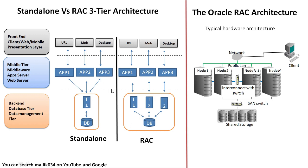And then my back-end is going to be my database — either standalone or a RAC. In standalone, one instance points to one database. If you see here, I have three applications and all three applications are pointing to instance 1.